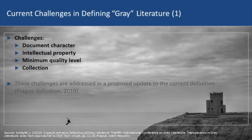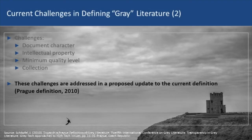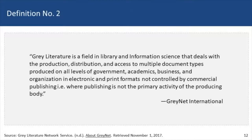There have been continued attempts in the field to define gray literature in a way that's more understandable in terms of the character of the document, types of documents, intellectual property, authorship, and a minimum quality level — whatever it is, it's something that people feel is valuable enough to be collected. There was a new definition offered in 2010 which is still under discussion. Perhaps one way to think about this is the way GrayNet International does: gray literature is really a field of its own in information and library science that deals with the production, distribution, and access to multiple document types produced at all levels of government, academics, business, and organization.